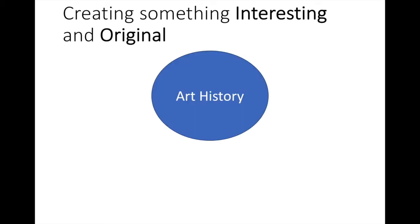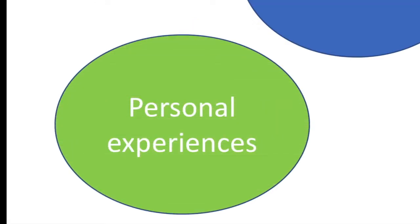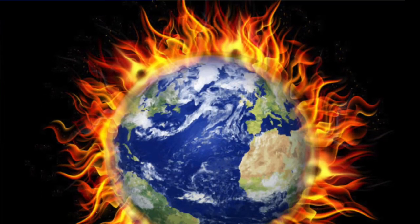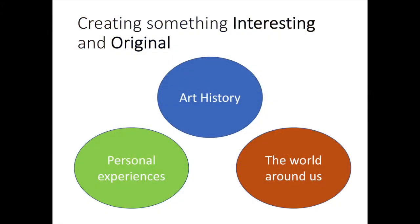We are going to pull from three different places to pull out our ideas. The first one is art history — we've already started working on that, we've done some research on some famous artists that you like. The two other places we're going to look are your own personal experiences, and then there's also the world around us — things that are affecting the world on a global or national scale.